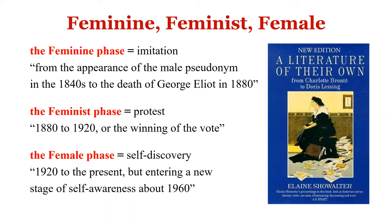Linking epiphany with Virginia Woolf: in To the Lighthouse, the character Lily Briscoe is a painter who initially cannot identify herself with her work. At the end of the novel she realizes she wants to be an artist, stops caring what people say about her art, and completes a beautiful impressionist painting. So epiphany connects Stephen Dedalus in A Portrait of the Artist, Wordsworth's leech-gatherer scene, and Lily Briscoe in To the Lighthouse — as well as the Female phase in Showalter's A Literature of Their Own.